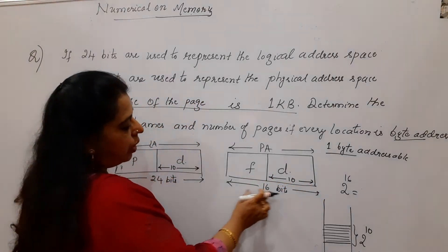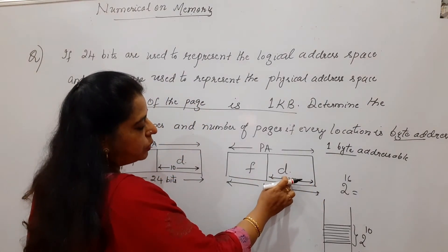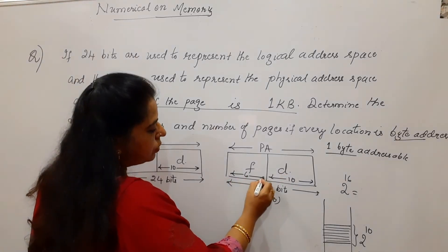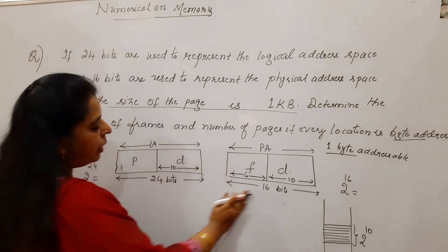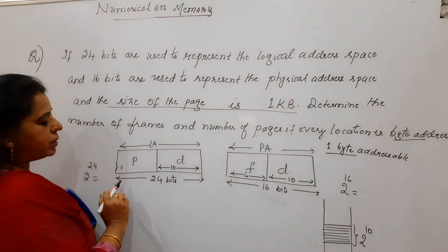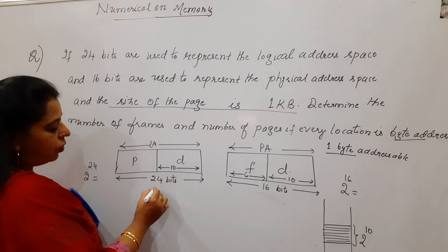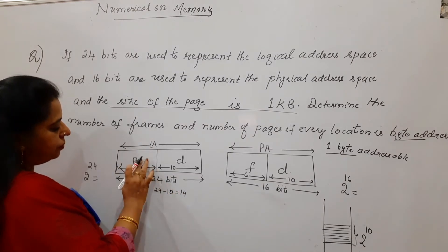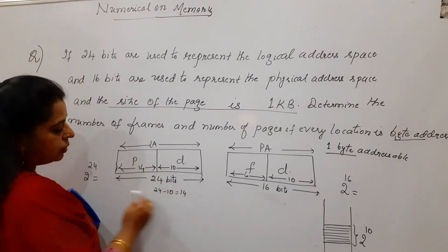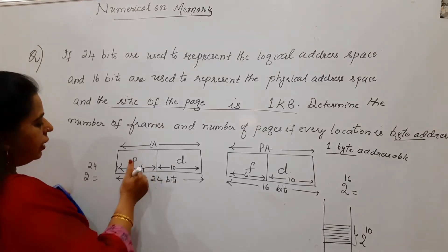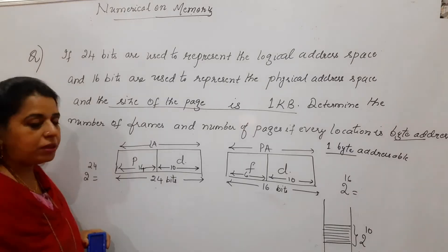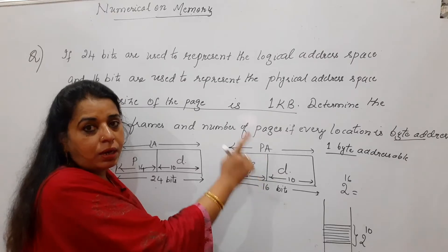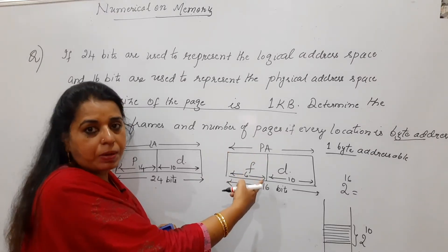Out of 16 bits for the physical address, if 10 are used for displacement, then 16 minus 10 equals 6 — so 6 bits are used to represent the frame number. Similarly, for the logical address, if 10 bits represent the displacement, then 24 minus 10 equals 14 — so 14 bits are used to represent the page number.